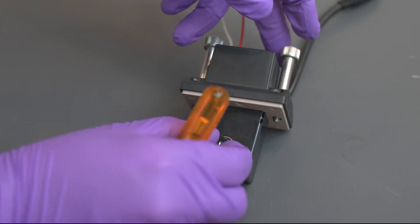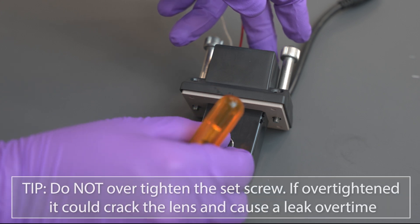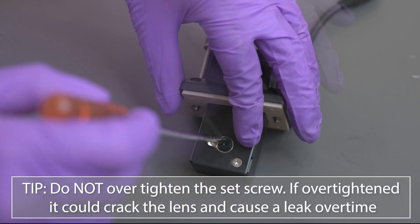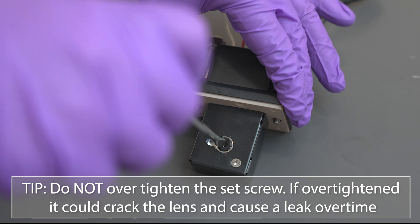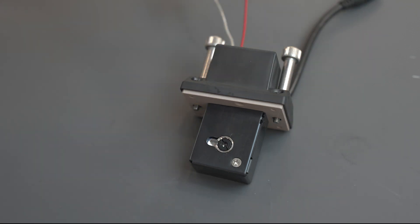Attach the set screw over the lens and tighten it. Do not over tighten the set screw. If over tightened, it could crack the lens and cause a leak over time. Repeat this step for the other side.